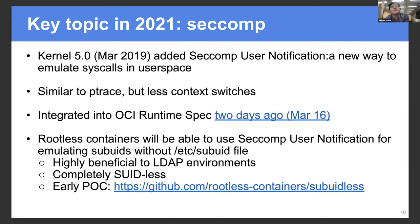The big topic of this year is seccomp. Just two years ago, kernel version 5.0 added a new feature called seccomp user notification. This is a new way to emulate system calls in user space. This is very similar to ptrace, but it's more lightweight, so it doesn't need context switches compared to ptrace.